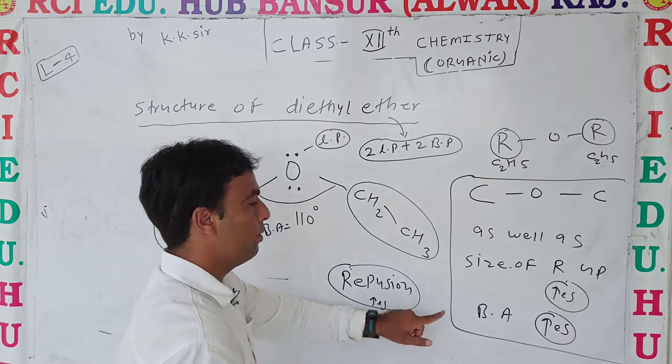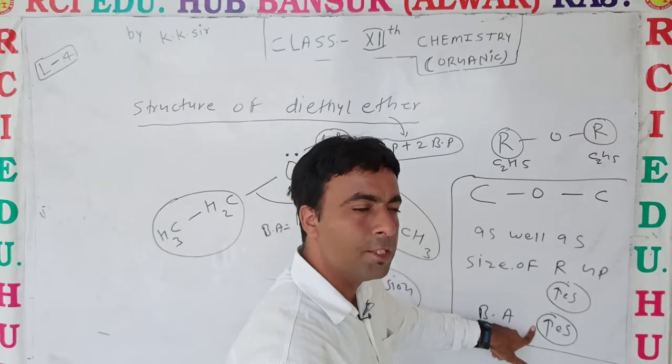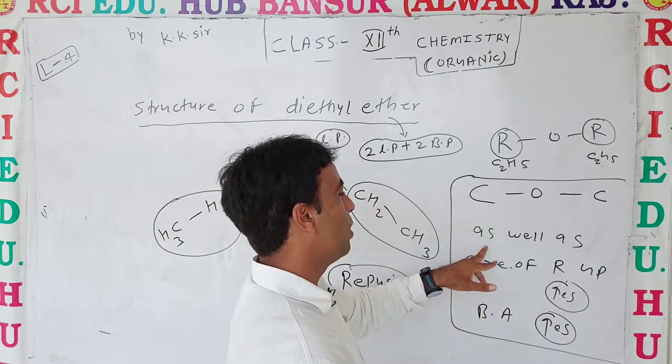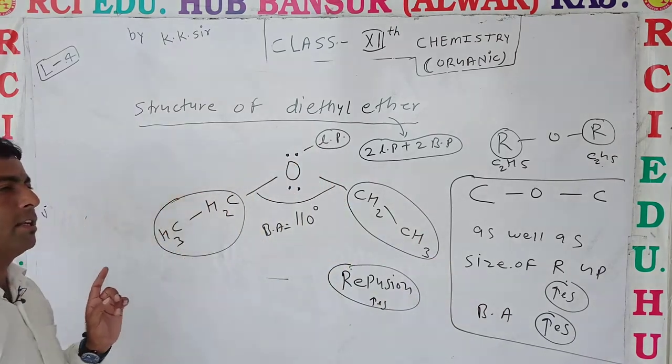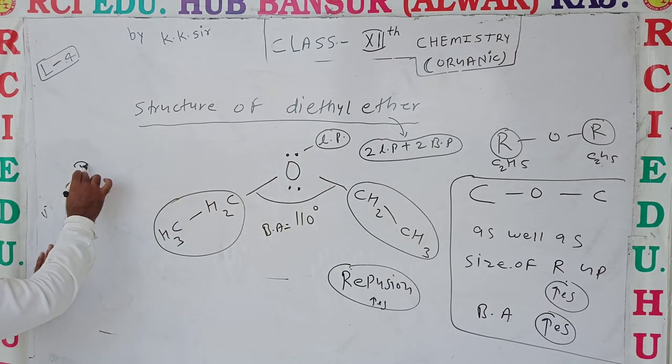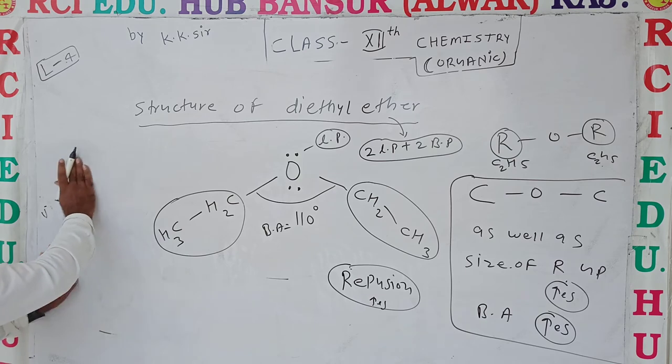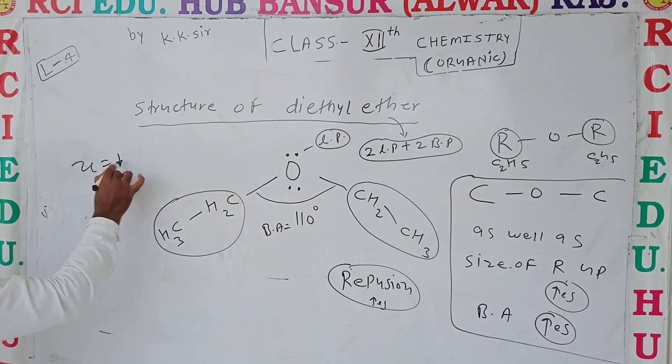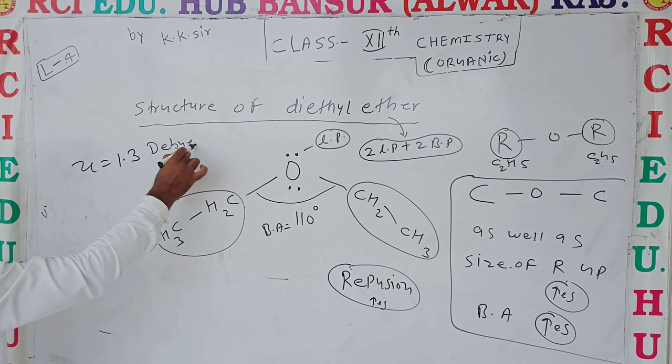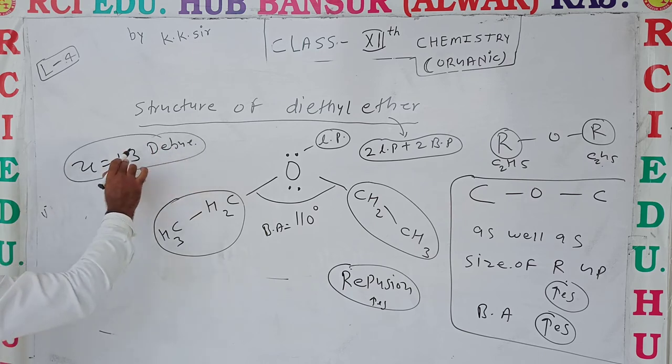The carbon-oxygen-carbon bond angle is increased, so the COC bond will be decreased - that is an important part. It also has, because it's ionic compound-like, a dipole moment of 1.3 Debye. Mostly ether is used as a solvent.